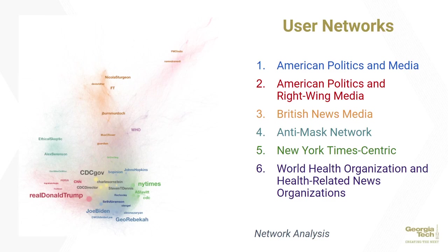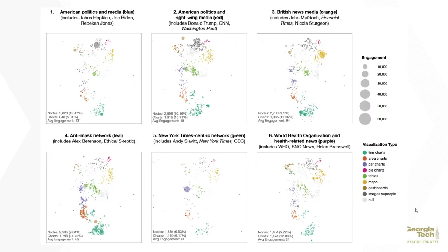Notably, the New York Times-centric network is actually largely centered around one visualization by Andy Slavitt, announcing that the New York Times had sued the CDC over a bar chart that ended up being widely shared. Here we have the six groups and their individual UMAP representations of chart types. Note that the anti-mask group we are interested in is at the bottom left, group four.